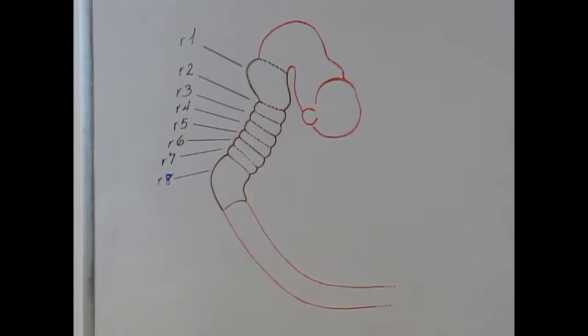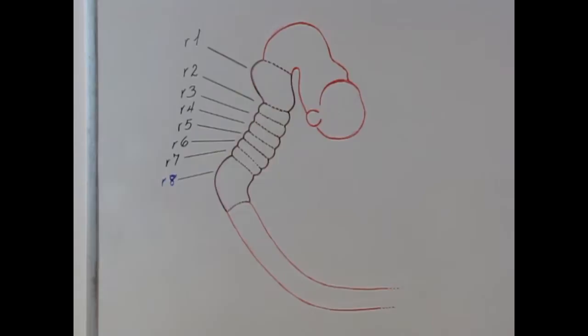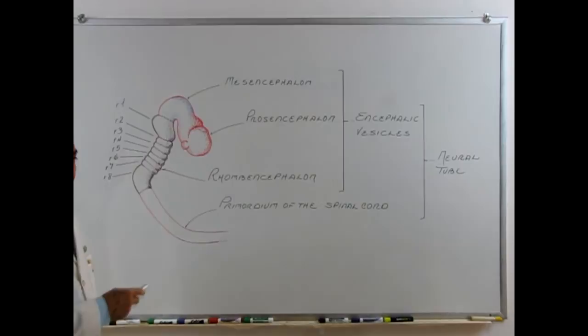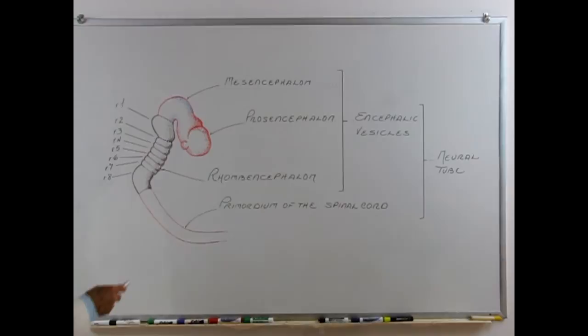Again, neuromeres. These neuromeres include the biggest one in the cephalic region of the rhombencephalus, and another large segment called a neuromere at the end of the rhombencephalus. This will be the future zone of the myelencephalus during the fifth week of intrauterine development. This neural tube, during the fourth week, is composed of two different portions: the encephalic vesicles and the primordium of the spinal cord.